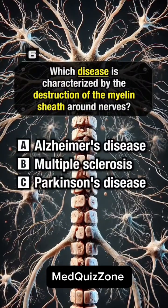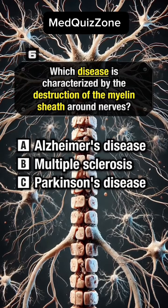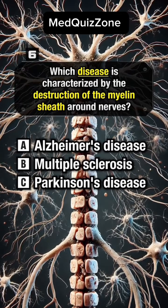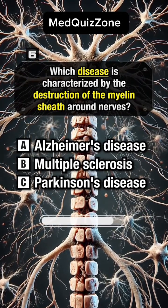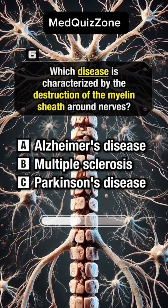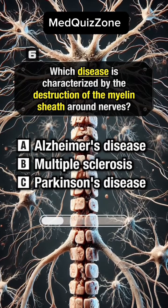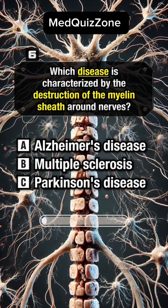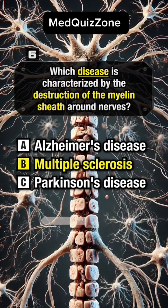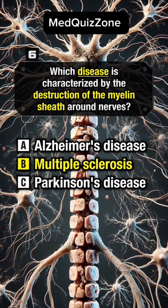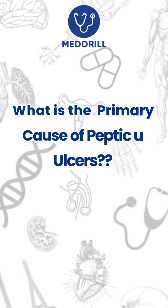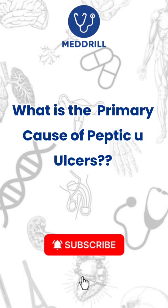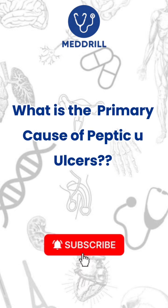Which disease is characterized by the destruction of the myelin sheath around nerves? Answer B. Multiple sclerosis.